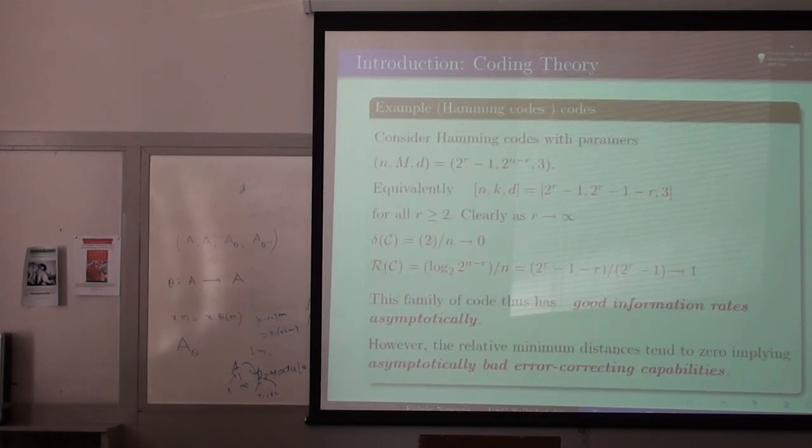Here is another one. This is a family of Hamming codes. When you compute the parameters of this code, you notice that the relative minimum distance tends to 0, while the transmission rate tends to 1 as r goes to infinity. What does that tell us? For this class of codes, it has asymptotically good information rate. The rate at which information is being transmitted is great. But at the same time, the disadvantage and downside is very poor error correcting capabilities.